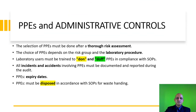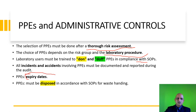PPEs must be used in conjunction with administrative controls. The selection of PPEs must be done after thorough risk assessment — this in itself is an administrative control. The choice of PPEs depends on the risk group and the laboratory procedure. Laboratory users must be trained to don and doff PPEs in compliance with SOPs — donning refers to wearing a PPE and doffing refers to its removal. All incidents and accidents involving PPEs, including tearing during usage as well as expiry dates, must be documented and reported during the audit. PPEs have an expiry date and should not be used after that date. PPEs must be disposed of in accordance with standard operating procedures for waste handling, which may involve autoclaves as well as incineration.